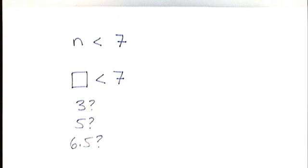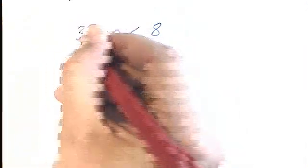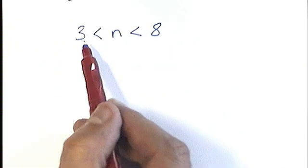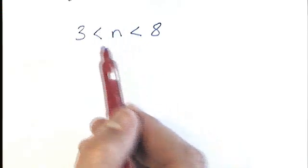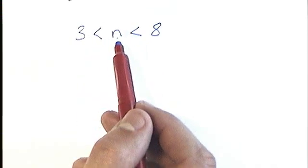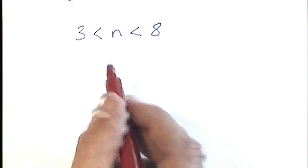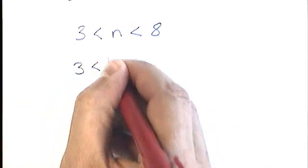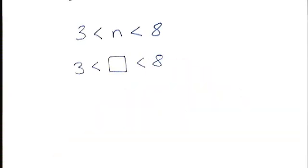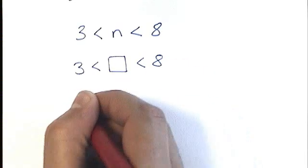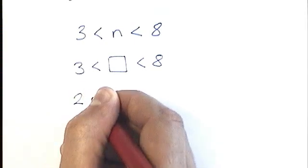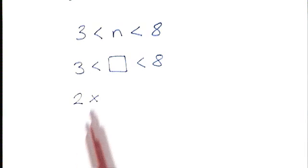Let's have a look at another inequality. N is less than 8 but is also greater than 3. When you see an inequality like this with a less than, less than, and a letter in between, what it means is that the value of that letter is between 3 and 8. So if I think about this in terms of a box, what numbers could I put in the box? Could I put 2 in the box? No. 2 is not between 3 and 8.